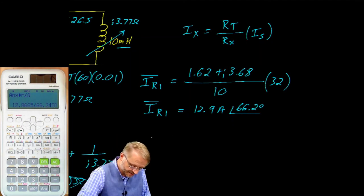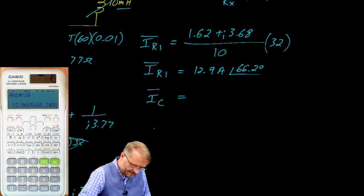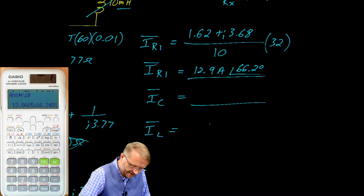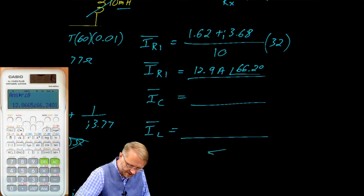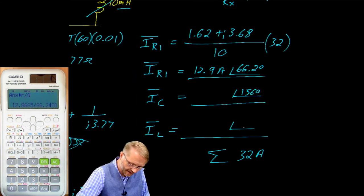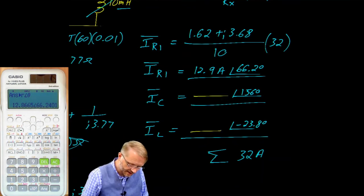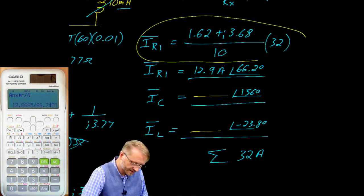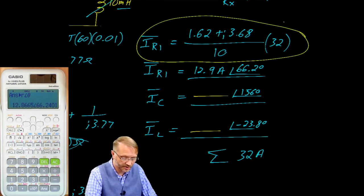And I'll leave it as an exercise for you to figure out what the current on the capacitor is and figure out what the current on the inductor is. And when you have all three of these values and you take the summation, they better equal 32 amps. I'll give you a hint. This one here is at an angle of 156 degrees and this is at an angle of negative 23.8 degrees. So again, I encourage you to calculate this value and that value using the current divider rule. It's a good experience with your calculator.